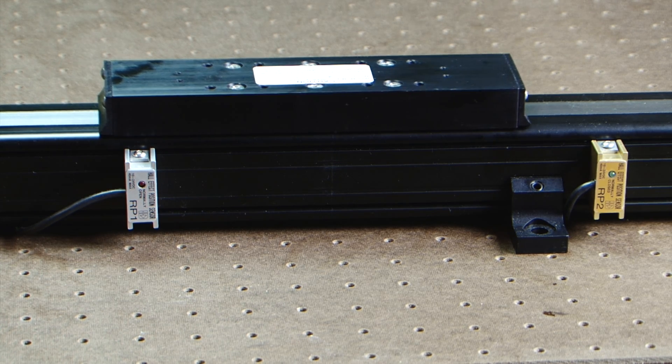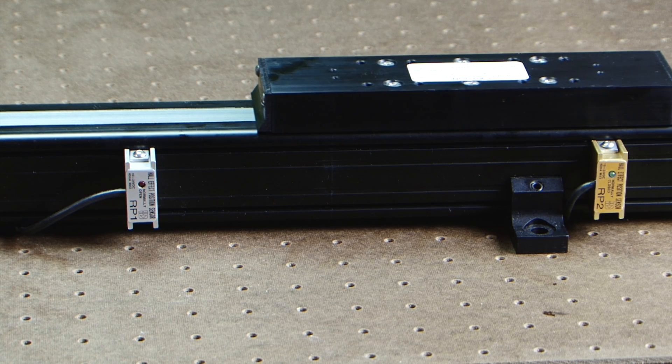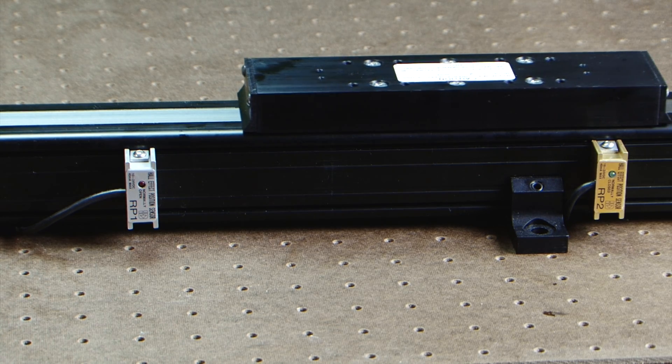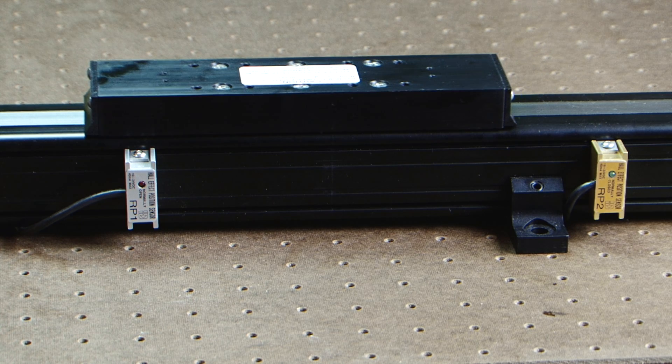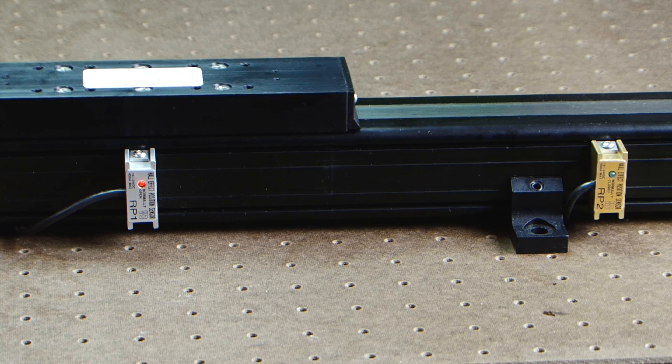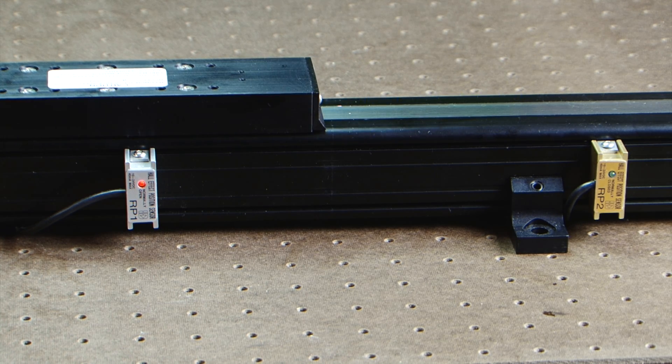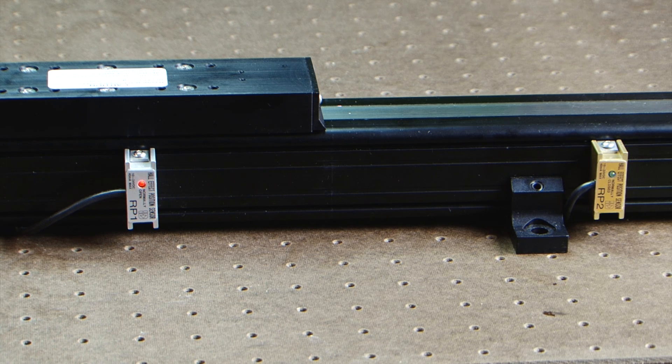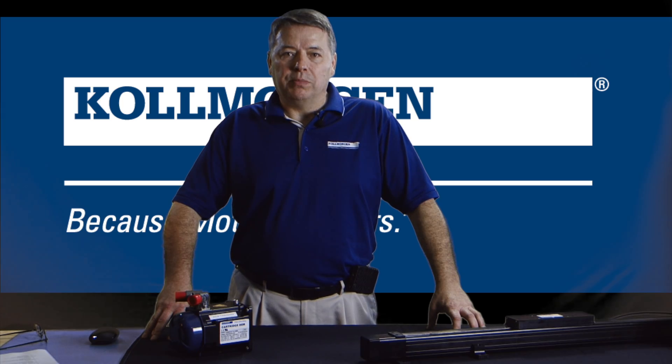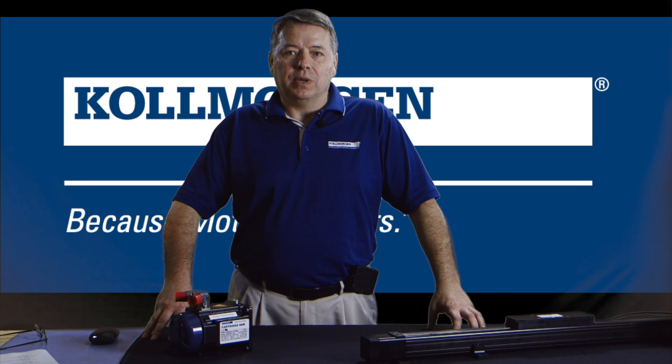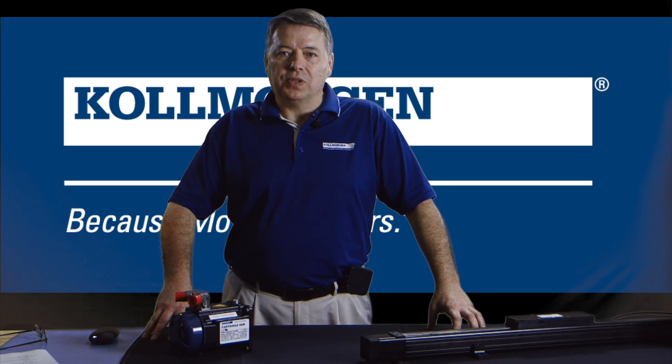Since the negative end of travel will be encountered before the home switch, the drive will change directions. It will continue until the home switch is encountered, but will continue past the switch, then change directions. This allows the switch to be made from the negative direction as defined in the home setup.